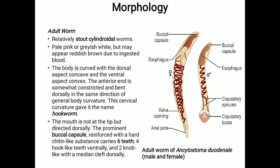The common name for Ancylostoma duodenale is hookworm. The mouth is not at the tip but directed dorsally. The prominent buccal capsule, reinforced with a hard chitin-like substance, carries around six teeth — four hook-like teeth ventrally and two knob-like teeth with a median cleft dorsally.